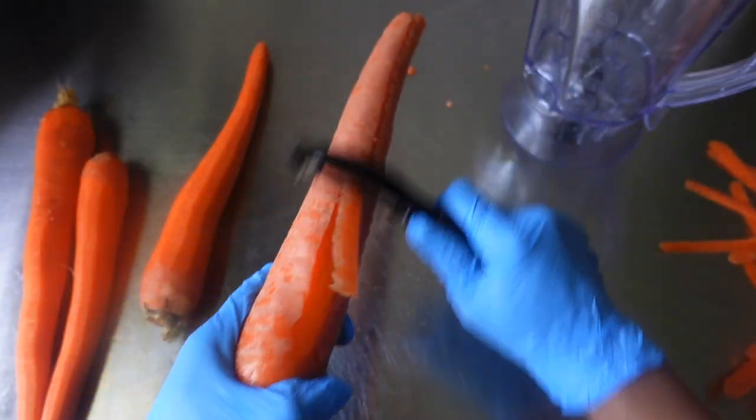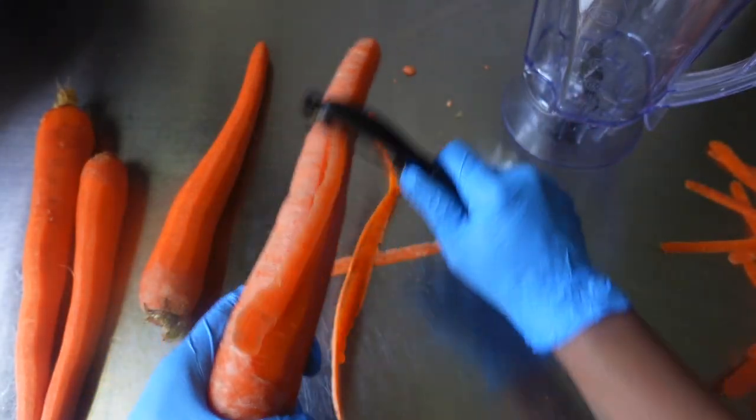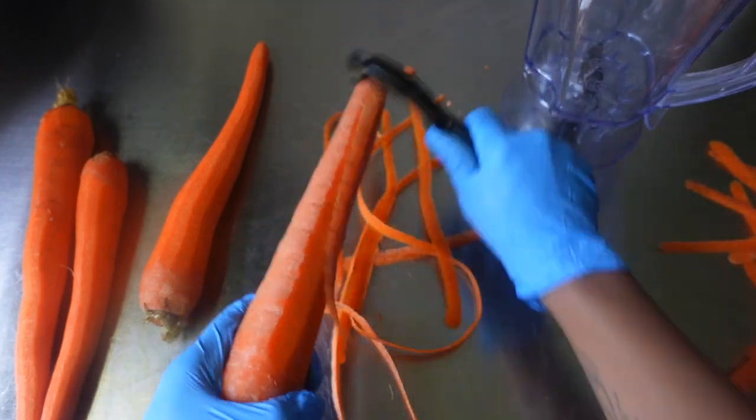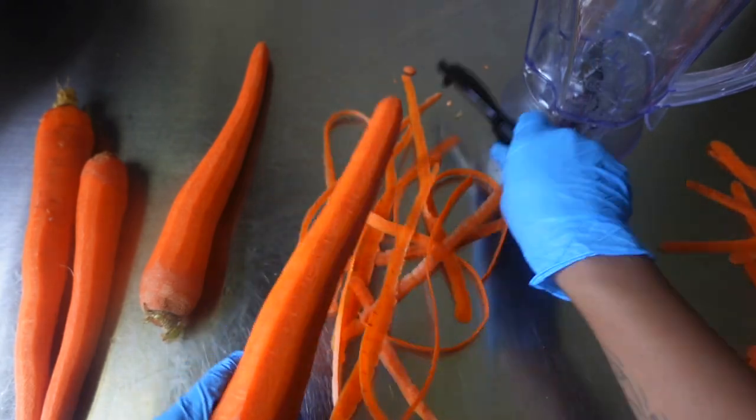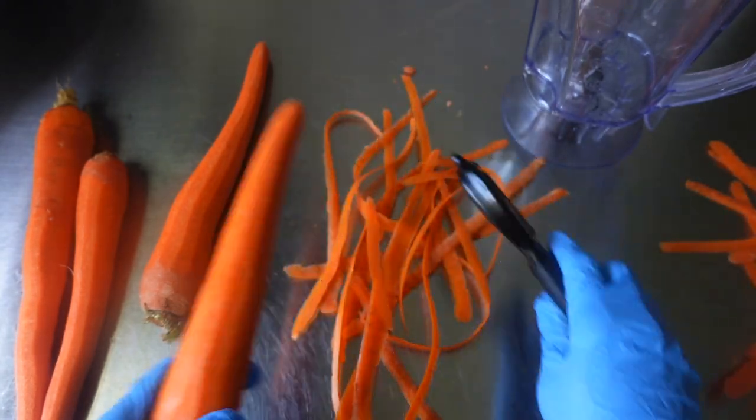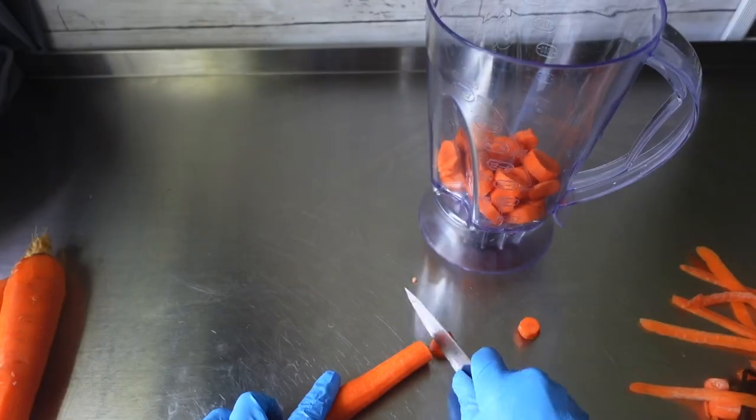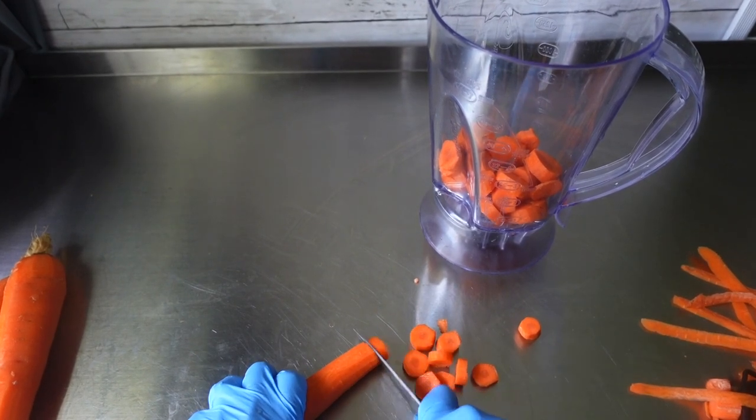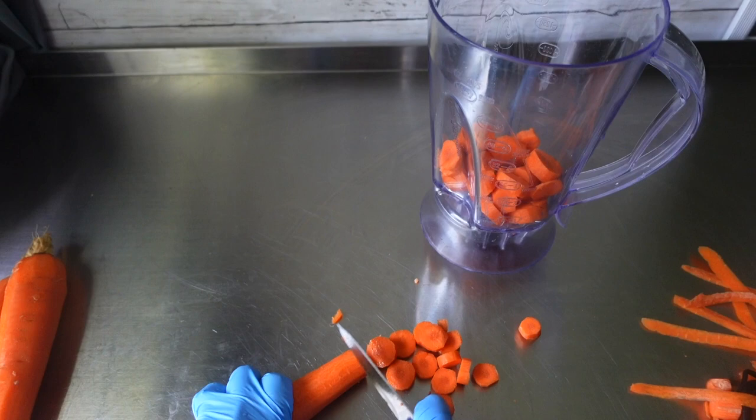All right, so first I started out by peeling my carrots and I have four laid out on my table. But for this particular soap, I only needed three carrots. And once I got them all peeled, it was time for me to chop those up and put them into my blender.